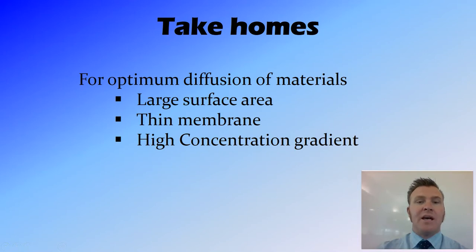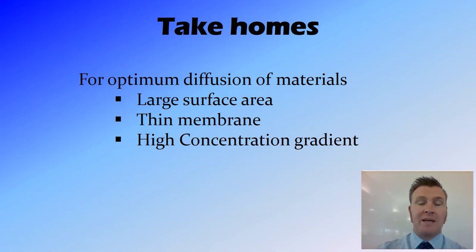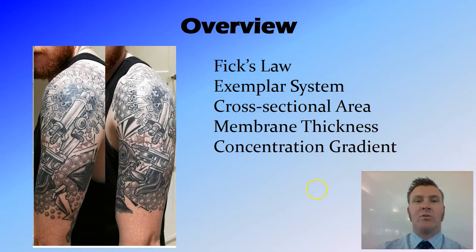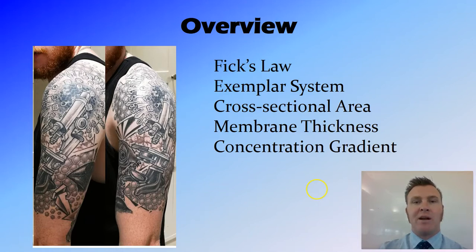So the take-home from this is that for optimum diffusion — the maximum rate of diffusion — we want in our biological systems a large surface area, a thin membrane (or in the case of tissues, only a few cells to get through), and a high concentration gradient. In summary, we've talked about Fick's Law, which states that the rate of diffusion is proportional to the cross-sectional area, the membrane thickness, and the concentration gradient. Increasing cross-sectional area increases diffusion; decreasing membrane thickness increases diffusion; and increasing the concentration gradient increases diffusion.